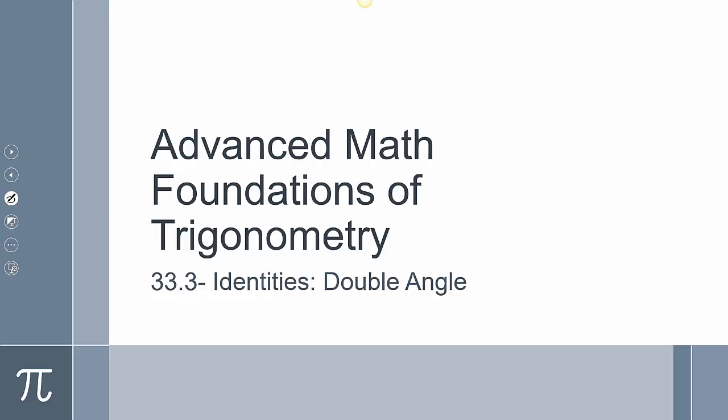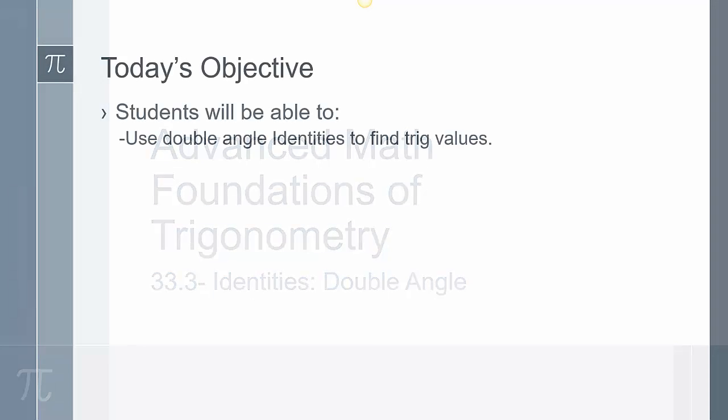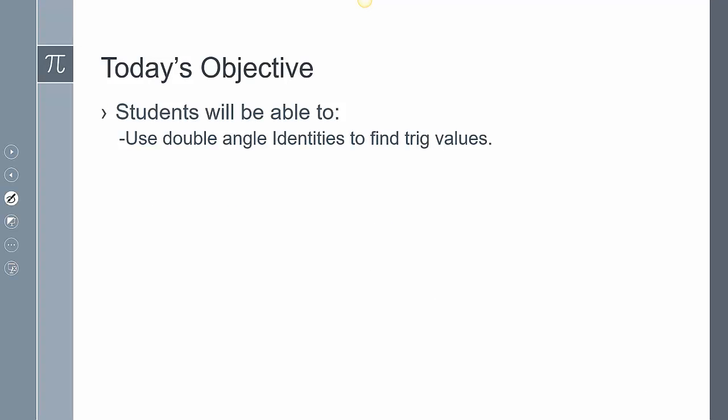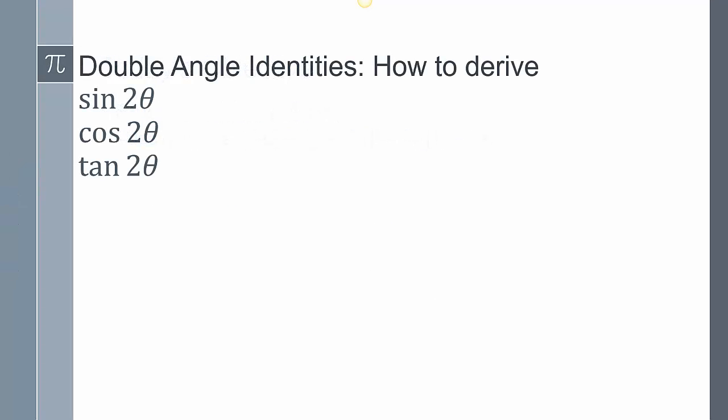This is going to be lesson 33-3 and we're going to take a look at double angle identities. We're going to use double angle identities to find trig values.